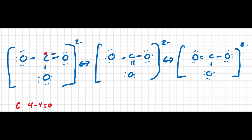Now let's do the same for the double-bonded oxygen. Oxygen normally starts with six valence electrons. Looking at the double-bonded oxygen in carbonate, there are four unbonded electrons and two bonded electrons — one from each part of the double bond — giving six electrons total. So six minus six means this oxygen also has a formal charge of zero. The closer you are to zero, the better your formal charges.